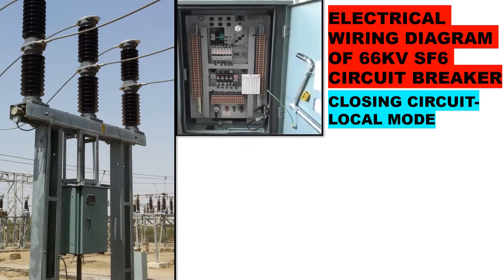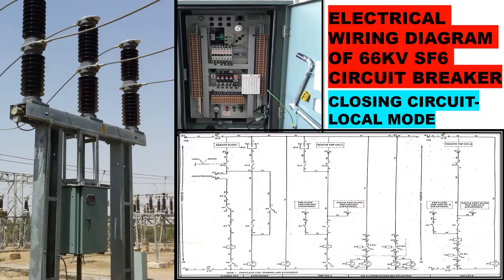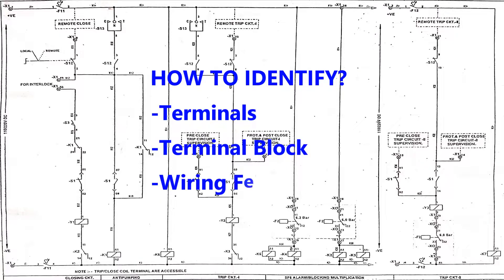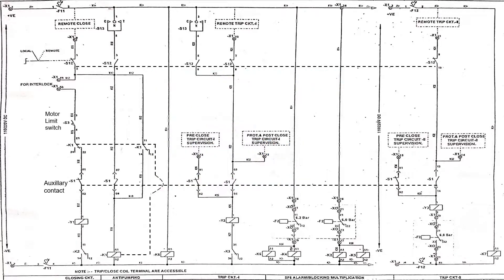Today we will see the closing circuit in local mode of a 66kV SF6 circuit breaker wiring diagram. In this given network diagram, we will learn how to read and identify its terminal block and wiring ferrules. We will represent this diagram in a more simplified interconnected way. Here we will only see the closing network path in this video and the remaining part will be covered in upcoming videos.